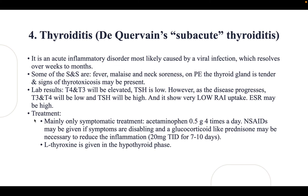Treatment of de Quervain's thyroiditis is symptomatic: acetaminophen 0.5 grams four times a day, or NSAIDs if symptoms are disabling. A glucocorticoid like prednisone 20 mg three times a day for seven to ten days may be necessary to reduce inflammation. Levothyroxine is given in the hypothyroid phase.